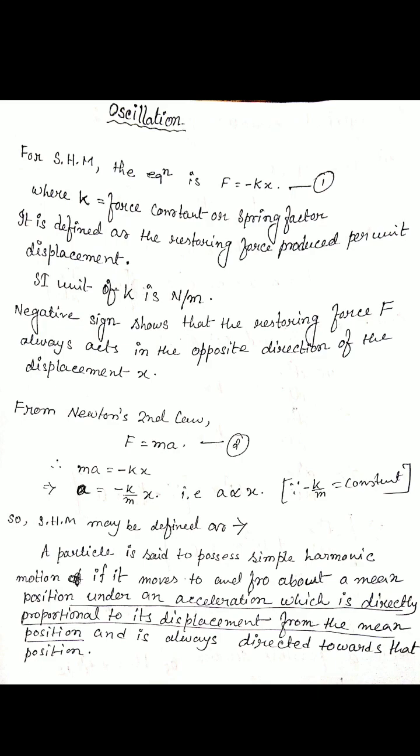This force F equals minus kx is called the restoring force — it always acts towards the mean position or equilibrium position. It is defined as the restoring force per unit displacement: k equals F divided by x. The unit of k is newton per meter. The negative sign shows that displacement and restoring force are opposite in direction.